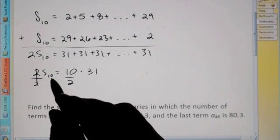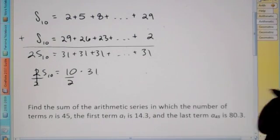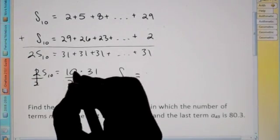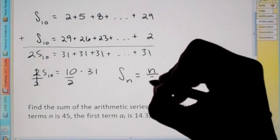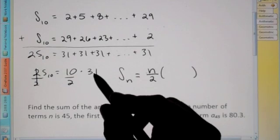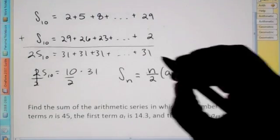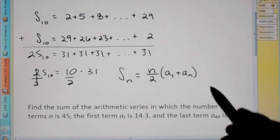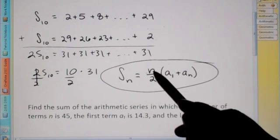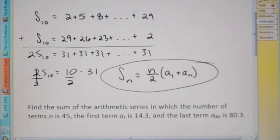So here we have S₁₀ is equal to 10 over 2 times 31. Now we're going to assign variables to get our general formula. So let's say we didn't know what 10 was — we're talking about the number of terms, so you can say n over 2 times... and for the 31, if you think about it, 31 is your first term plus your last term. So a sub 1 plus a sub n. This is the formula we're going to be using for a series: however many terms we're looking for is n, and we find the first term plus the last term, multiply and add those up.